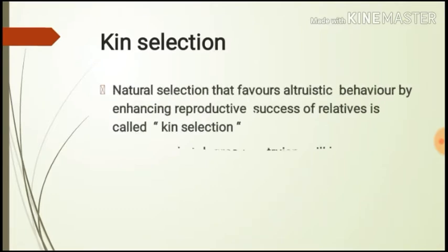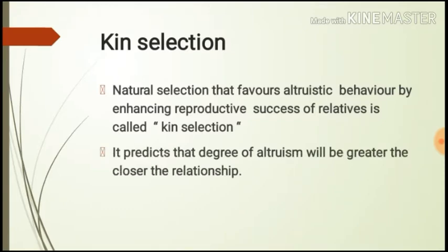Now let's see what is kin selection. The natural selection that favors altruistic behavior by enhancing the reproductive success of relatives is called kin selection. Kin selection theory predicts that animals are more likely to behave altruistically towards their relatives than towards unrelated members of their species. Basically, an organism will help its related organism before helping an unknown individual.